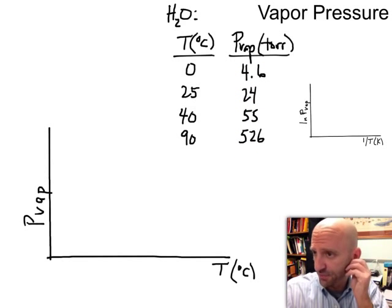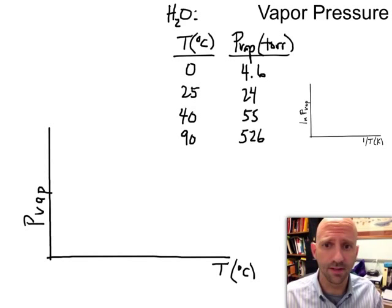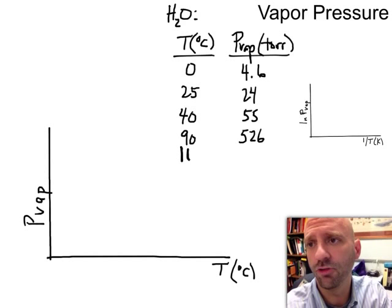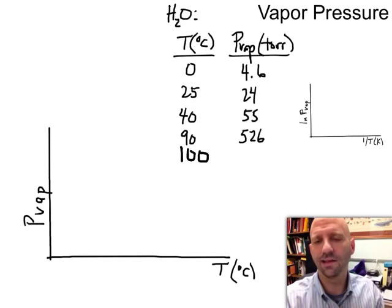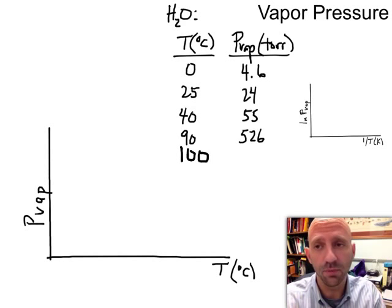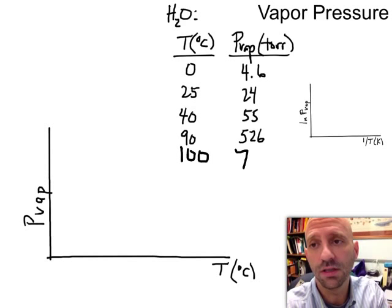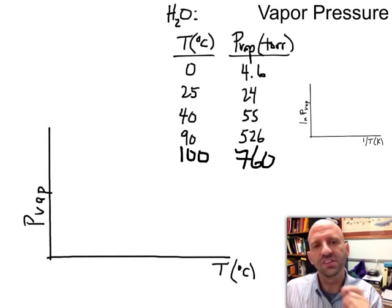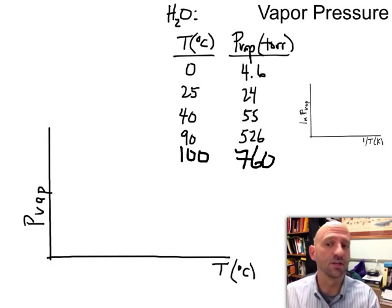If you've thought to yourself, I think I know where they're headed. I think I know that if we had let's say 100 degrees here, I think I know what the vapor pressure of water at 100 degrees is. Did you say perhaps that it's going to be 760? Hopefully you did. So this actually gets to an important definition that we have.